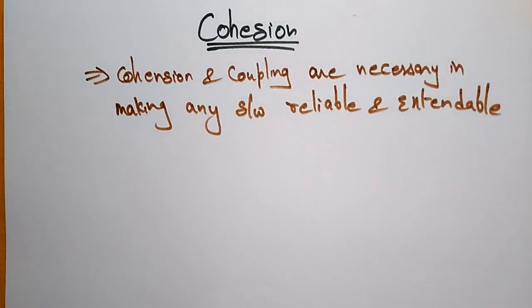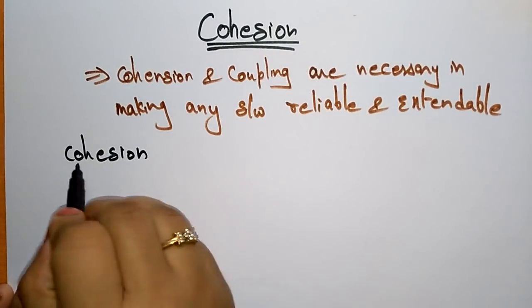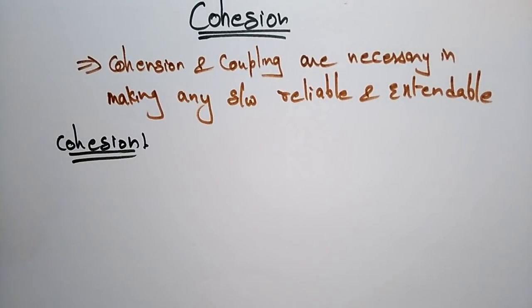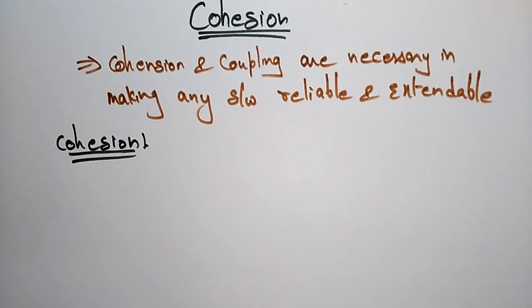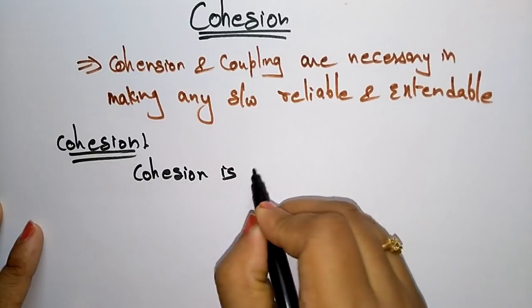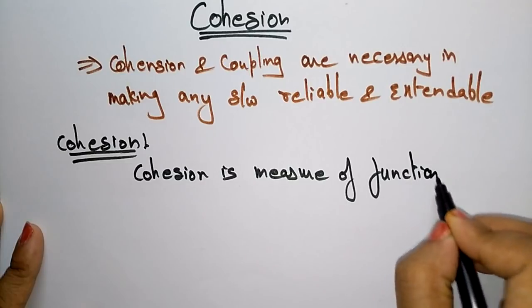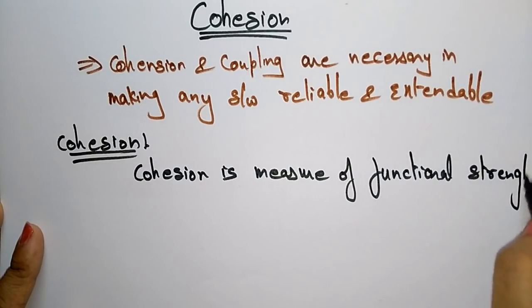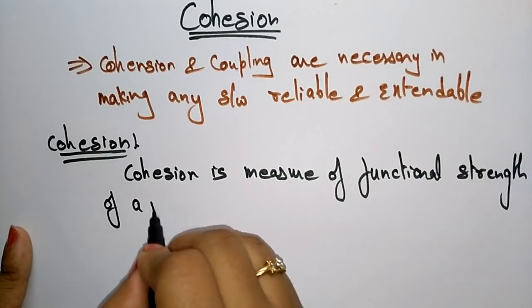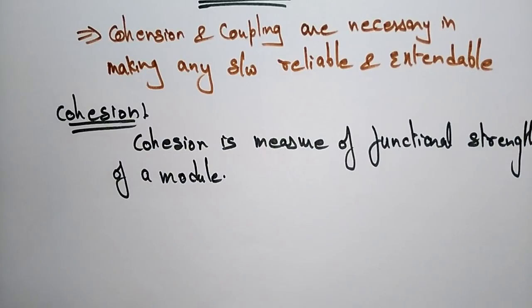Now let us see what cohesion is. Cohesion is a measure of the functional strength of a module. Both coupling and cohesion are measures — cohesion specifically is a measure of the functional strength of a module. A cohesive module performs a single task or a single function.